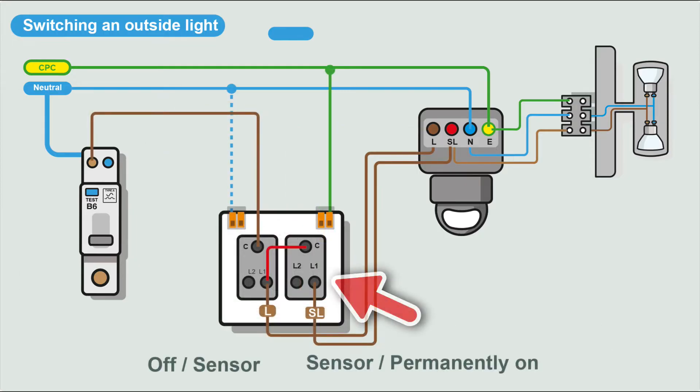To add more functionality, we need to add an extra switch. There's lots of different ways of wiring. Sometimes you get the neutral at the switch, which I've indicated here. You should always have a CPC at the switch. You should run a CPC to every point.